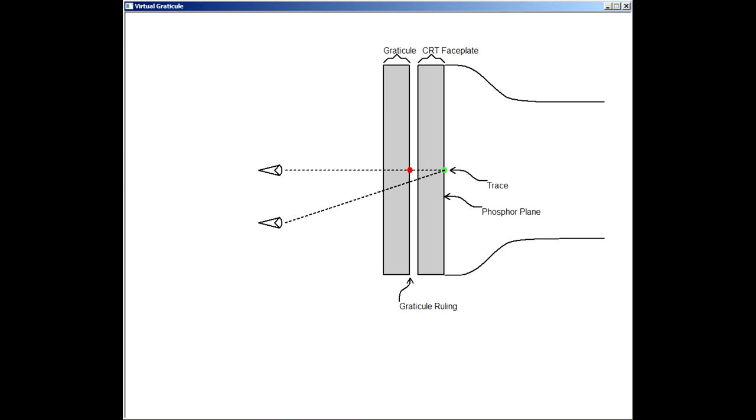This caused measurement errors unless the image was viewed straight on. Even then, the slight angle between the top and bottom or left and right sides of the screen could cause errors.